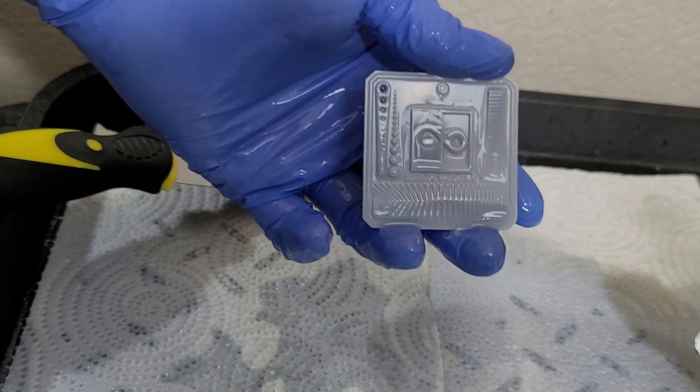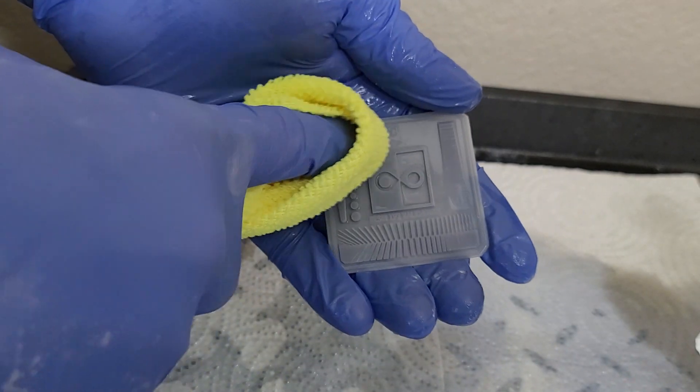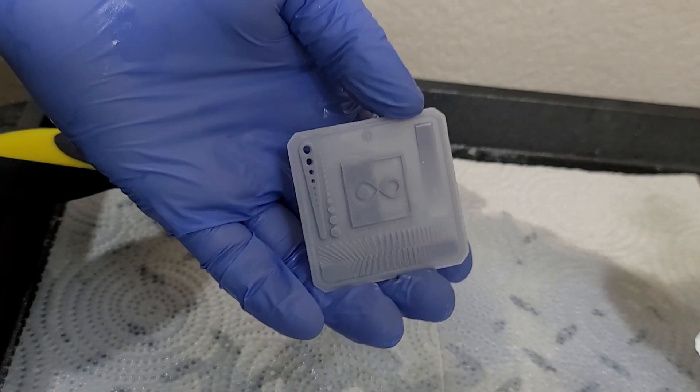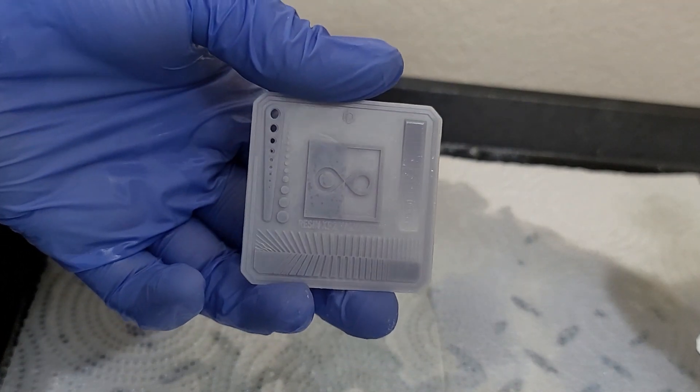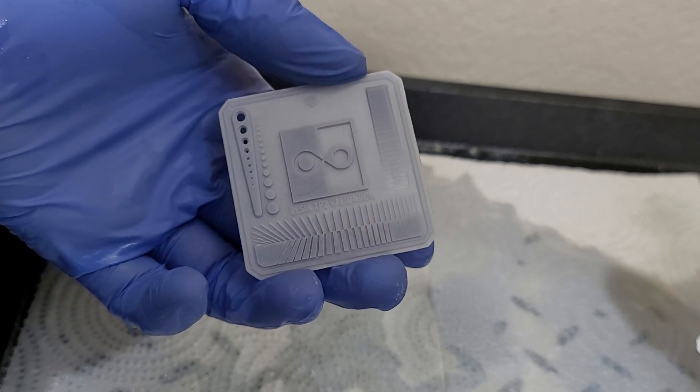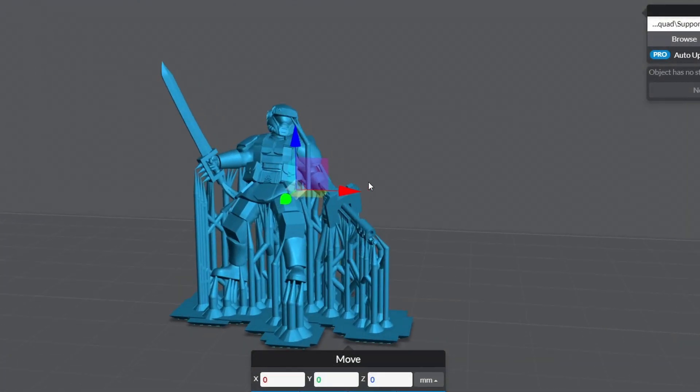So think of it this way. Underexposure is like undereating. You become skinny and weak and small. Overexposure is like overeating. You begin to swell up, you get bigger, and all your definition disappears. You simply want a nice happy medium where you can get as much detail as you can without underexposing your miniatures or whatever the hell it is that you're printing.